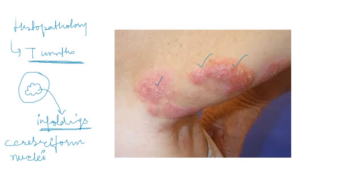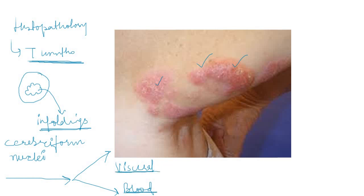In most cases of mycosis fungoides the lesion is not localized to the skin only — instead the lesion is disseminated and tumor cells involve the blood as well as visceral organs. When the lesion is disseminated into the blood and visceral organs, this condition is called Sézary syndrome, and it is characterized by both skin lesions and the presence of these cells in the peripheral bloodstream.